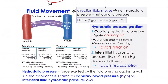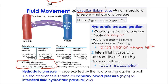That osmotic pressure draws fluid back in at the venous end. There are numbers on this slide — we're going to go through them quickly. You always look at net hydrostatic pressure minus net osmotic pressure. Instead of calling them hydrostatic and osmotic, the book calls them filtration and absorption. Filtration means leaving the capillary; reabsorption means being drawn back into the capillary.